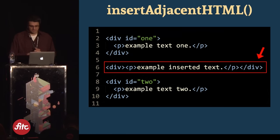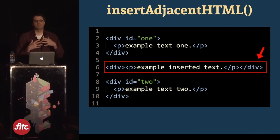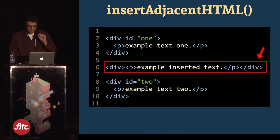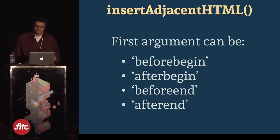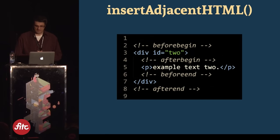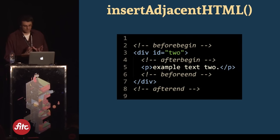First you grab a reference to the h2 element, then use the insertAdjacentHTML method passing in two arguments. The first is a string like 'beforebegin', and then you pass in a string of HTML. After running that code, the generated HTML is placed right where you wanted it. The first argument can be any one of four values: beforebegin, afterbegin, beforeend, and afterend — indicating exactly where relative to the target element the HTML will be placed.